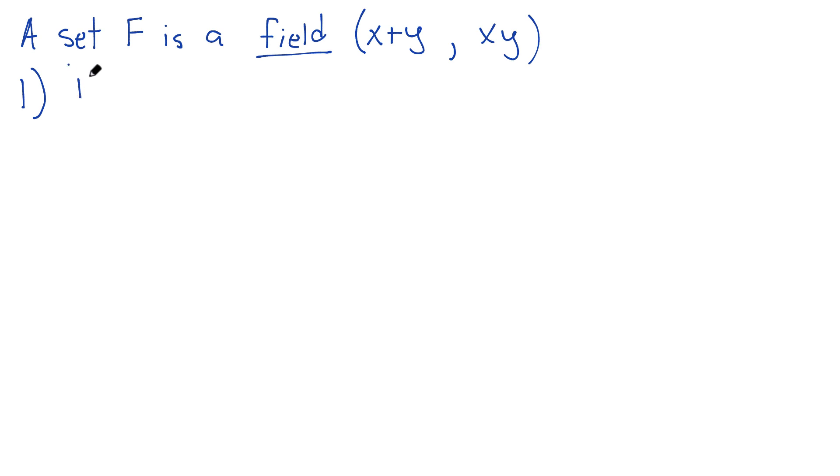Number one, if x is in F and y is in F, take two elements in F, well then their sum, their addition has to be in F. F has to have x plus y in it. In other words, I can use this addition. Sometimes this is called closure under addition.